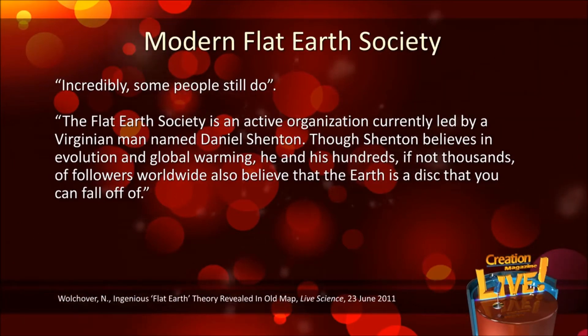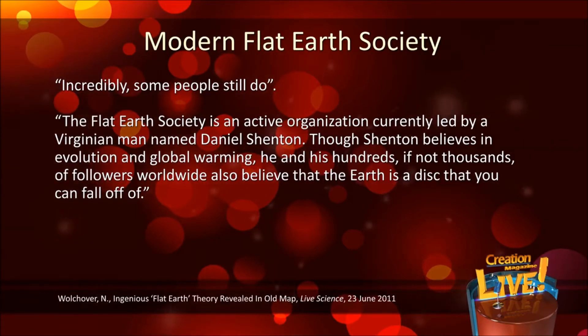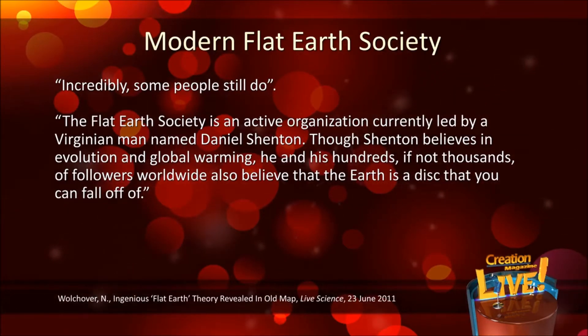In her report she said, The Flat Earth Society is an active organization currently led by a Virginian man named Daniel Shenton. Though Shenton believes in evolution and global warming, he and his hundreds if not thousands of followers worldwide also believe that the Earth is a disk that you can fall off of. The next time an evolutionist calls you a flat-earther, point out that the leading flat-earther is one of their fellow evolutionists. Regarding the photographic proof, which is probably the best proof there is, they say that NASA is covering up the truth about a flat Earth and promoting a spherical Earth via doctoring images and video to make the Earth look spherical through CGI, computer generated imagery.